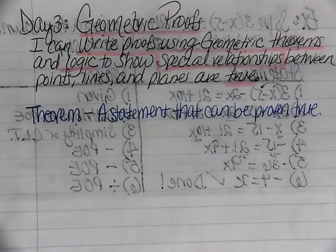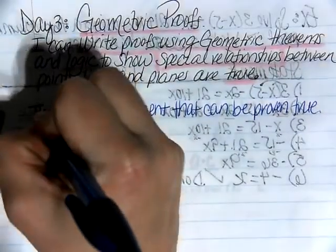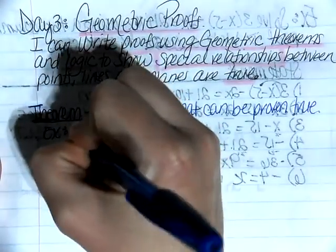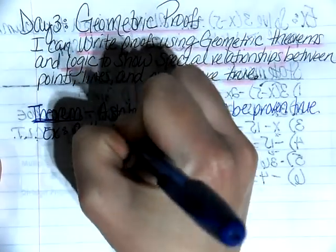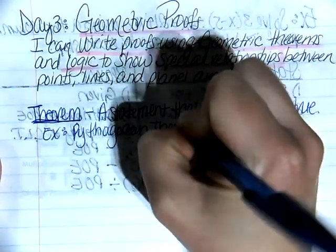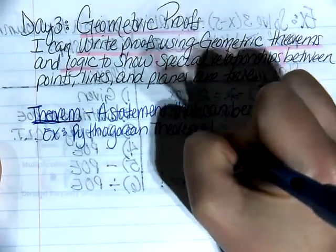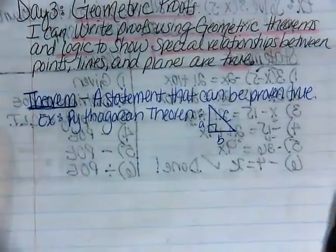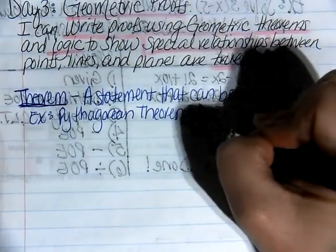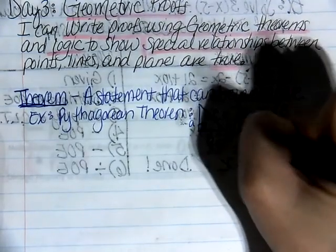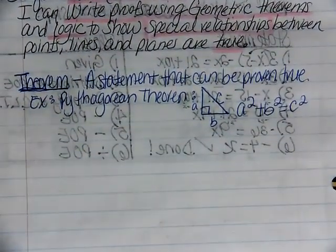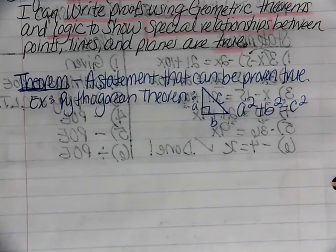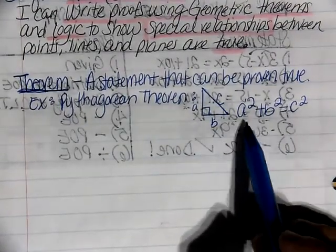A very common theorem that you are probably most familiar with would be the Pythagorean theorem. What the Pythagorean theorem says is that if you have a right triangle and the side lengths are called A, B, and C, it is always true that A squared plus B squared is equal to C squared, where C represents the hypotenuse and A and B represent the other side lengths.